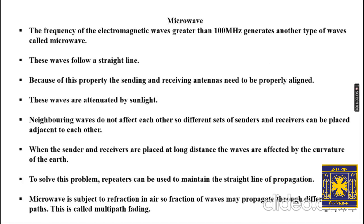Moving to another type of unguided media: microwave. Frequency of electromagnetic waves greater than 100 MHz generates microwaves. Microwaves travel in a straight line, so the sending and receiving antennas need to be properly aligned. These waves are attenuated by sunlight — during sunny days, microwave signals get distorted. Neighboring waves do not affect each other.